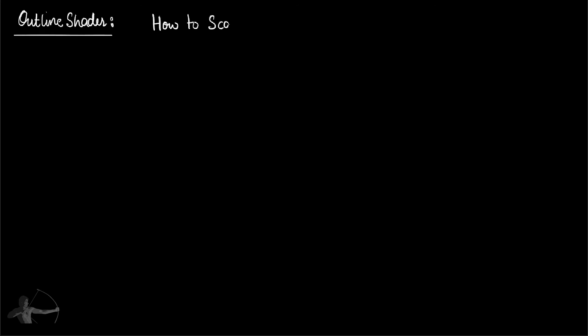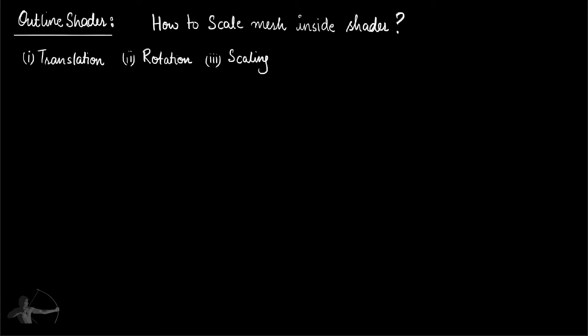The next question is how we will scale up the mesh inside the shader. In the chapter of MVP matrices, we understood that to perform any transformation operation — whether it be translation, rotation, or scaling of the object — we have to multiply the object matrix with its respective operation matrix. That means if we are translating a mesh, we multiply the object matrix with a translation matrix; if rotating, with the rotation matrix; and if we want to scale something up or down, we multiply the object space matrix with the scale matrix. For this shader, we will require the scaling matrix, but we will also take a look at translation and rotation matrices.